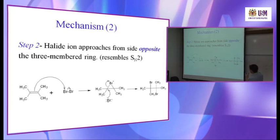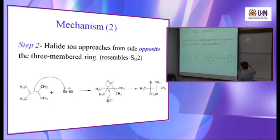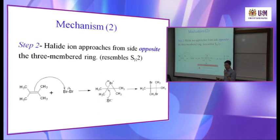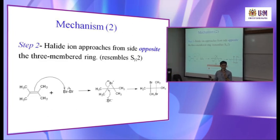The formation of the bromonium ion is the first step. Then the next step: the Br⁻ will attack the carbon here. In this case they are symmetrical, so there is no issue of which side to attack. The Br⁻ will attack the carbon, and the bond breaks. So you will yield an anti-addition product. This is different — just now the hydroboration reaction yielded a syn product; now you yield an anti-addition product. This is stereospecific also.